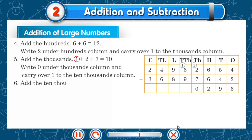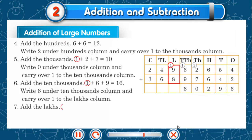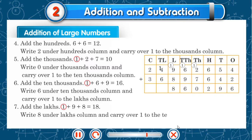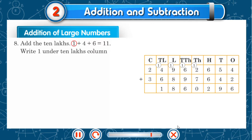Add the ten-thousands — 1 plus 6 plus 9 equals 16. Write 6 under the ten-thousands column and carry over 1 to the lakhs column. Add the lakhs — 1 plus 9 plus 8 equals 18. Write 8 under the lakhs column and carry over 1 to the ten-lakhs column. Add the ten-lakhs — 1 plus 4 plus 6 is 11. Write 1 under the ten-lakhs column and carry over 1 to the crores column.